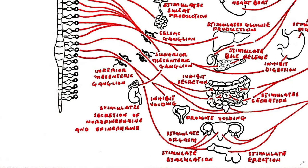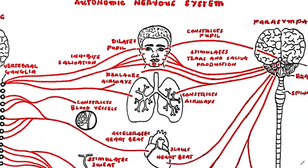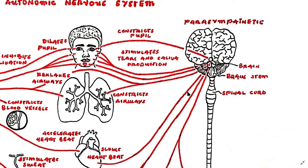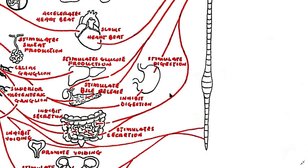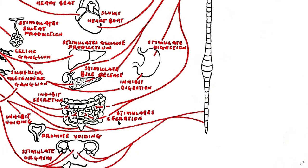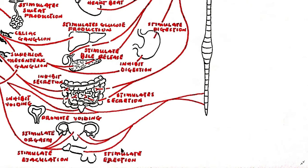Therefore we can see why the sympathetic system is popularly known as the fight-or-flight system. The parasympathetic system, on the other hand, works to constrict the pupil, stimulate tears and saliva production, constrict the airways, slow the heart rate, stimulate digestion, stimulate intestinal secretions, and also stimulate erection.